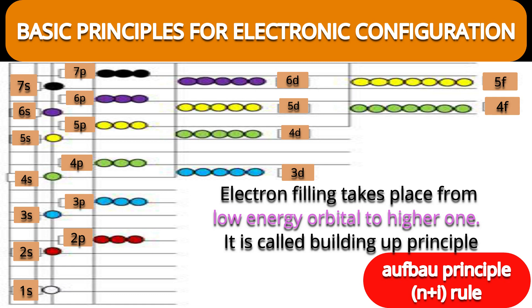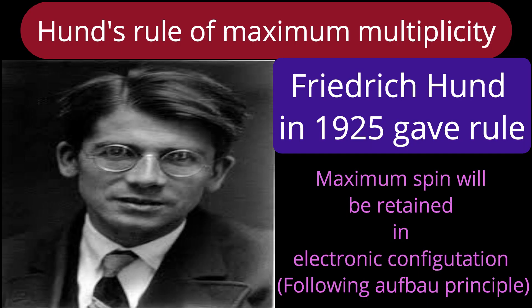Is the Aufbau principle clear? For elements with low atomic number, it will certainly help you. Now let us discuss Hund's rule of maximum multiplicity. This rule was discovered by Frederick Hund in 1925, in the modern chemistry era.